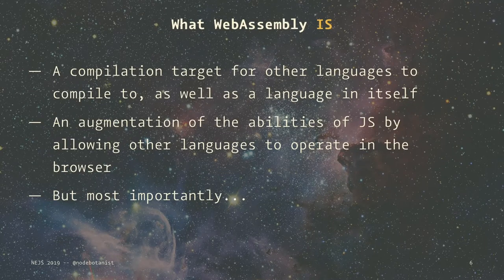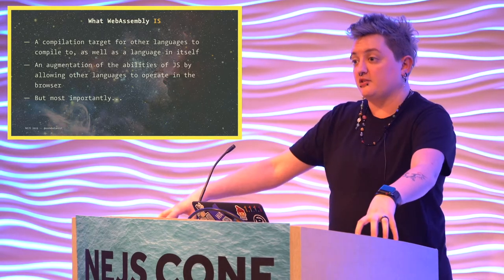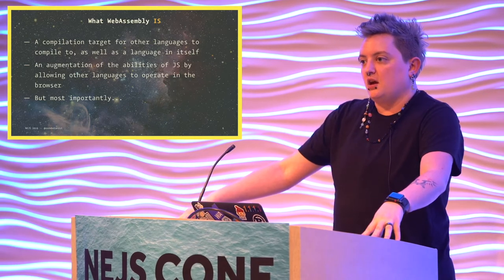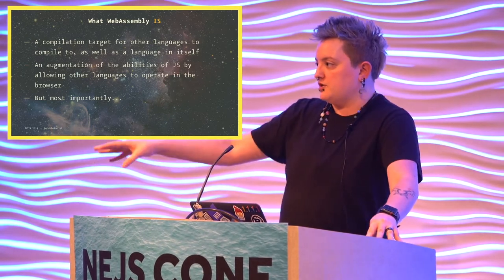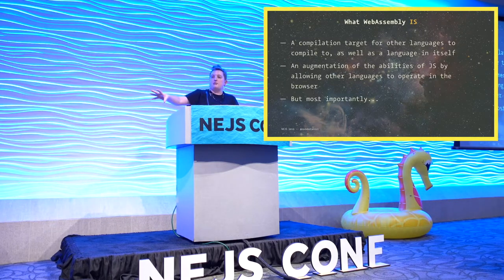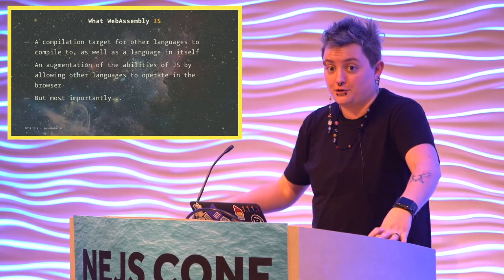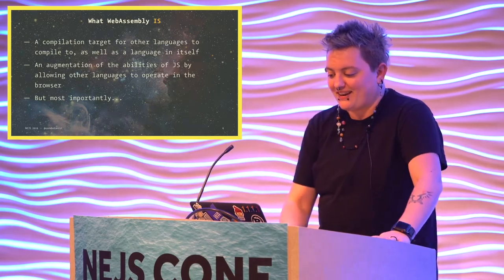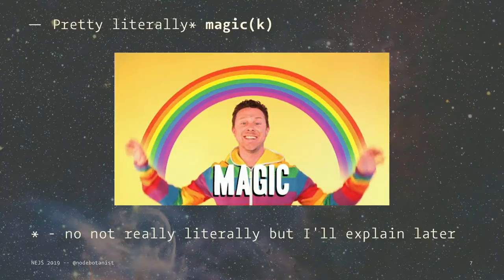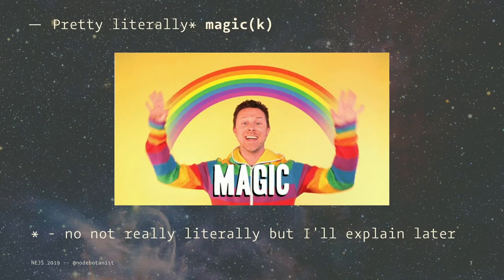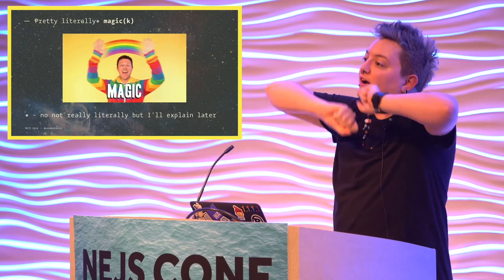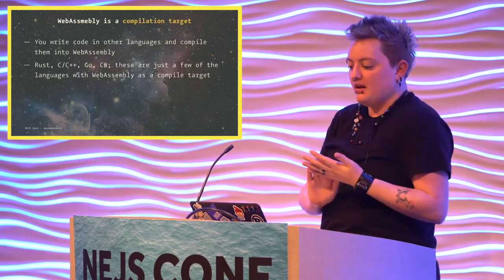What WebAssembly is: it's a compilation target for other languages to compile to, as well as a language in itself. Just like JVM languages are compile targets for the JVM and allow you to use other languages within the JVM, WebAssembly allows us to use other languages by being a compile target. It's an augmentation of the abilities of JavaScript by allowing other languages to operate in the browser. And most importantly, it's magic — not literally, but pretty literally.